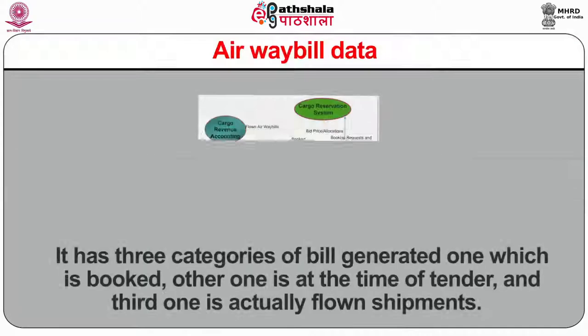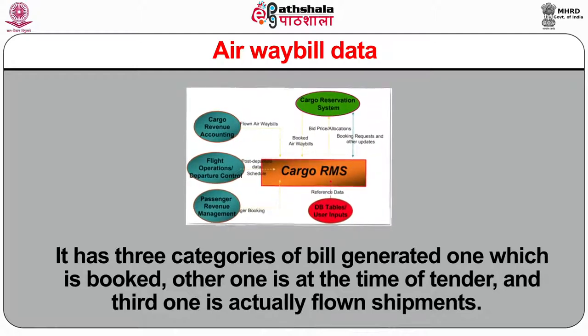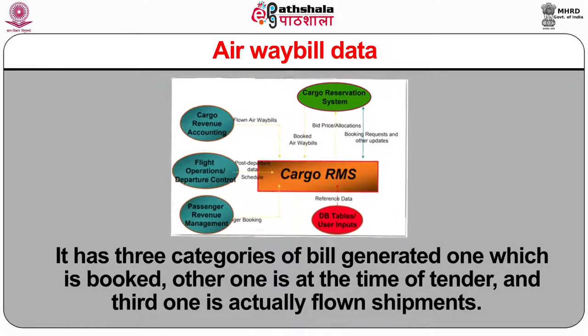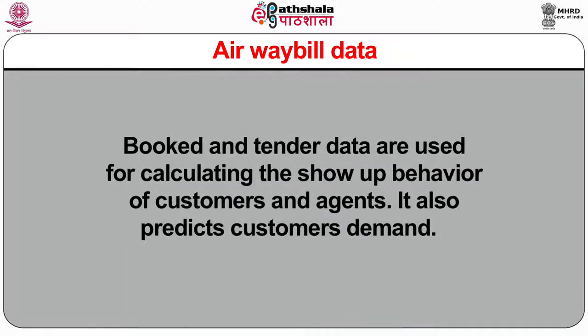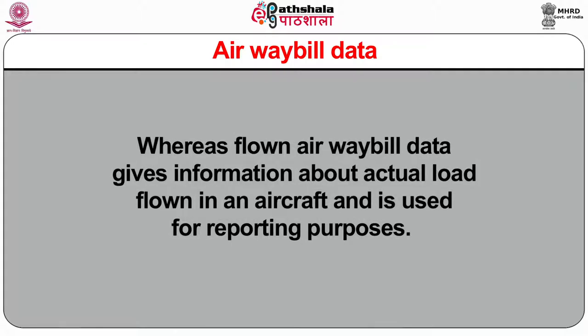Airway bill data has three categories: booked, at the time of tender, and actually flown shipments. Booked and tender data are used for calculating the show-up behavior of customers and agents and predicting customer demand. Flown airway bill data gives information about actual load flown in an aircraft and is used for reporting purposes. It includes shipment data such as country of origin, destination country, type of goods, number of flights compiled in one load unit, weight of shipment, name of the shipper, name of the consignee, flight number, date, and time.